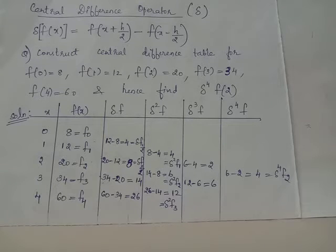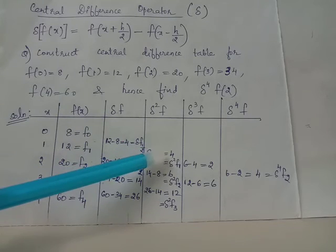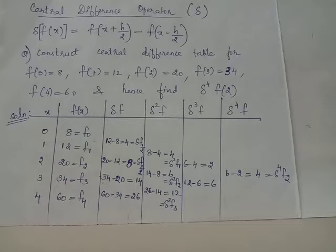Delta square f represents second central difference. The first value will be the difference between 8 and 4 which is 4. It has the notation delta square f1.